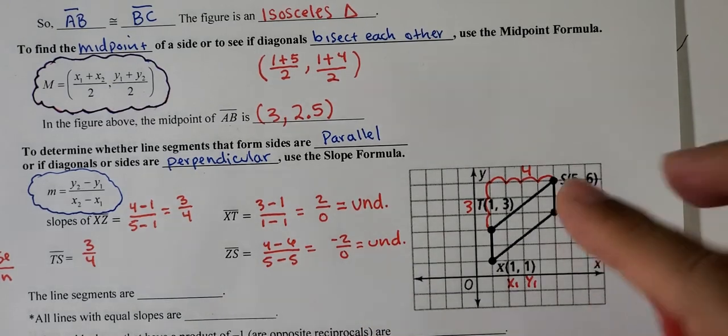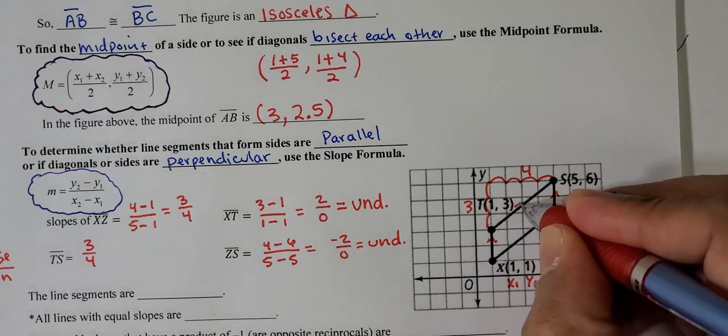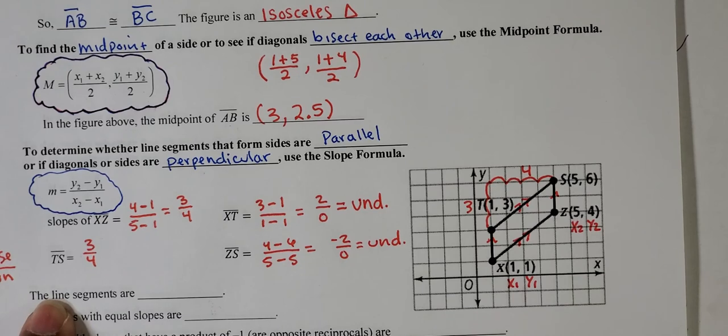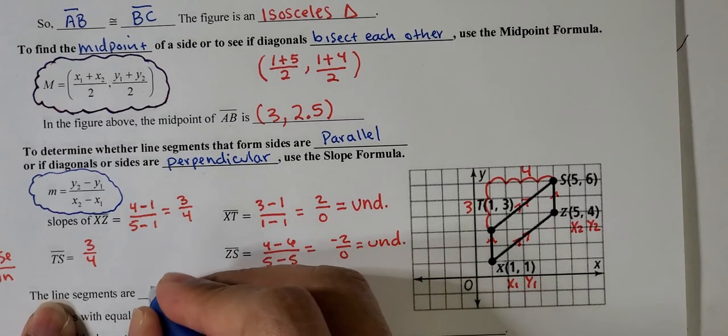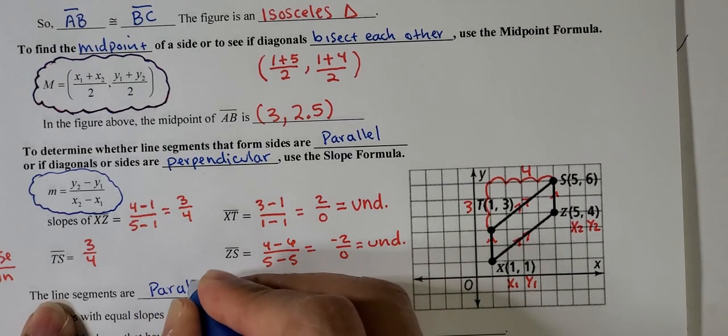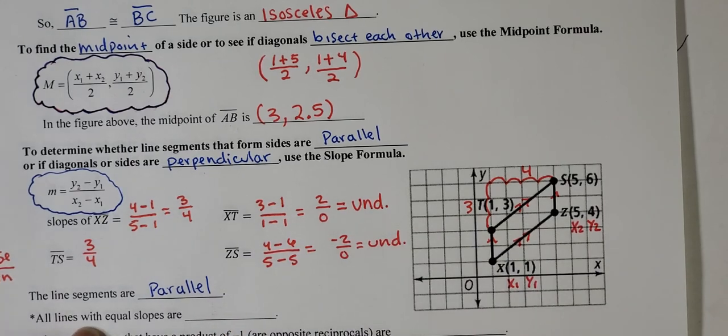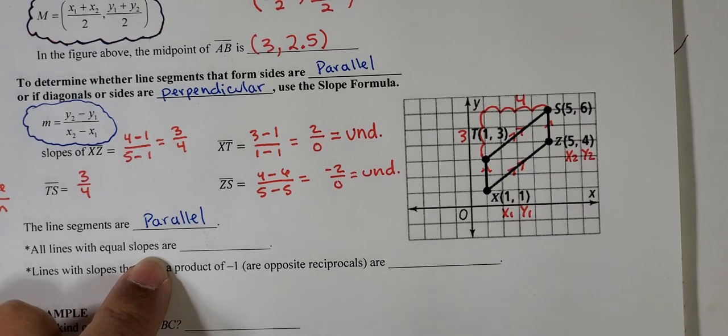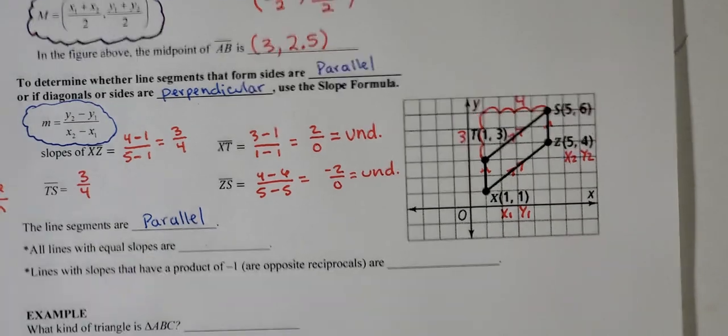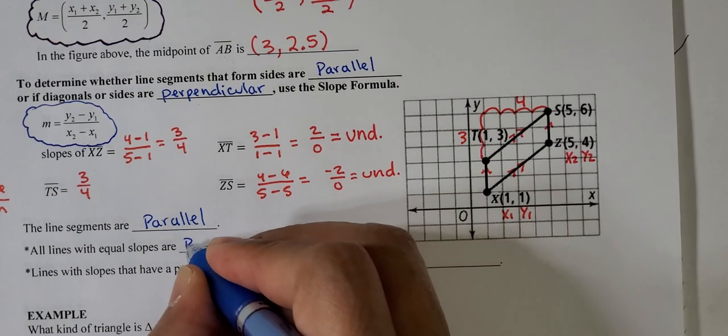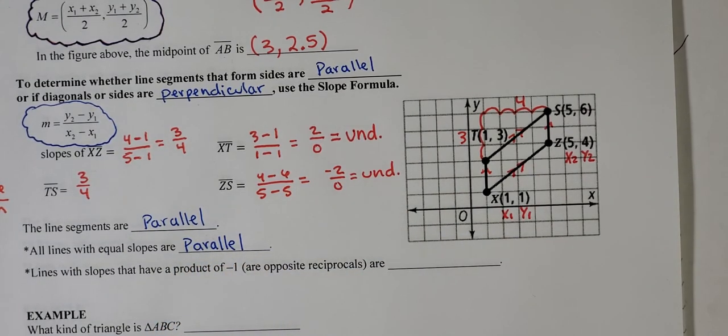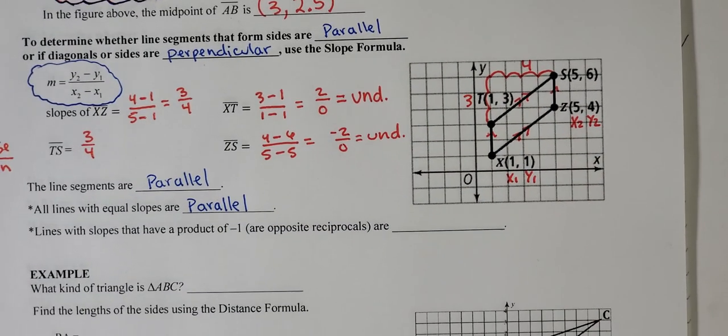As you can see, this side is parallel to this one, and this one here is parallel to this side, so the line segments are parallel. All lines with equal slopes are parallel. So if you find the slope of a line, and then you find the slope of another line or segment or side, and if they end up with the same slope, they have to be parallel.